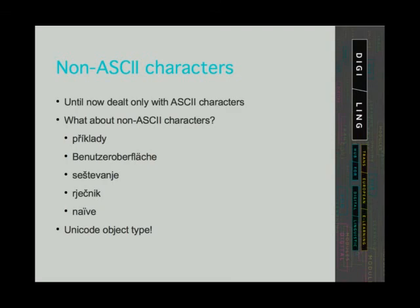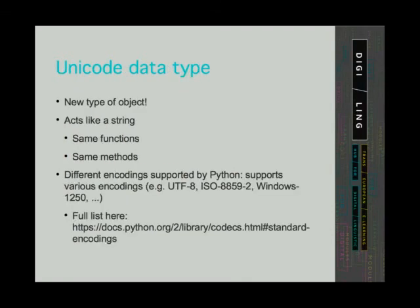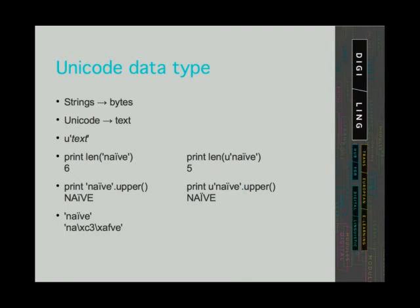Until now we have dealt only with ASCII characters, but what about non-ASCII characters found in texts? Even English contains characters not covered in the ASCII code page. We have already heard about Unicode — we can also use the Unicode standard in Python. Unicode is a new type of object. Unicode objects act like strings; the same functions called on strings can be called on Unicode. The main difference between strings and Unicode is that strings are a sequence of bytes, while Unicode is text. To designate that something is a Unicode, we write the letter U before the text in quotation marks.